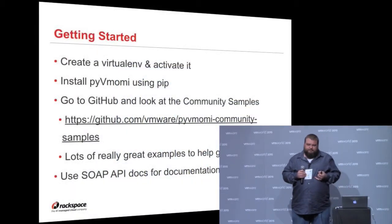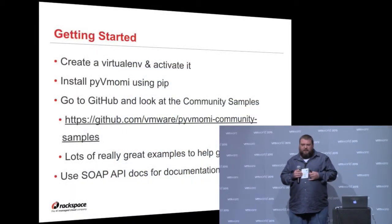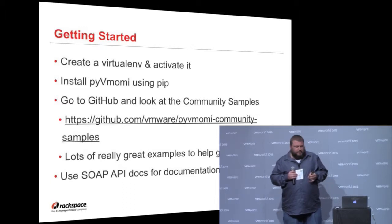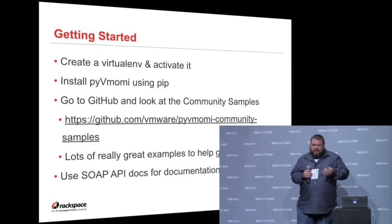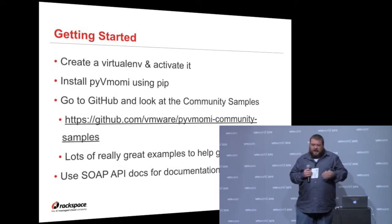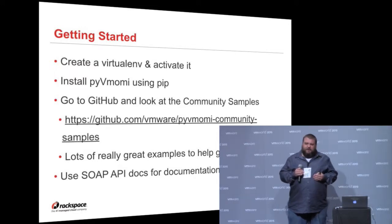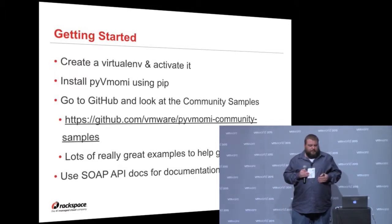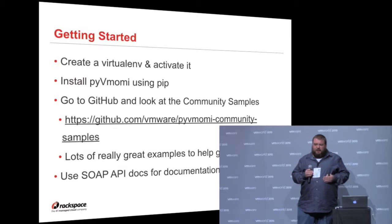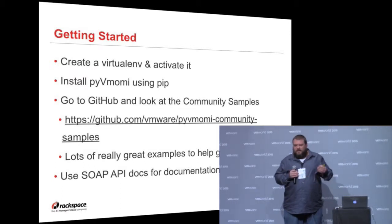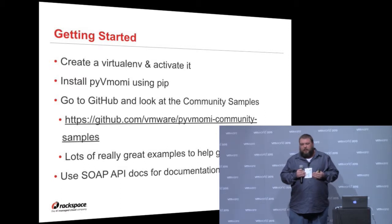Once you have all those things installed, all you need to do is create your virtual environment and activate it — you'll get the instructions from that tutorial. Run 'virtualenv' followed by the name of your virtual environment, then source the activation file that comes in your virtual environment. Next, you're going to pip install PyVMomi. Very simple — 'pip install pyvmomi' — and that'll get you the latest version of the PyVMomi code.